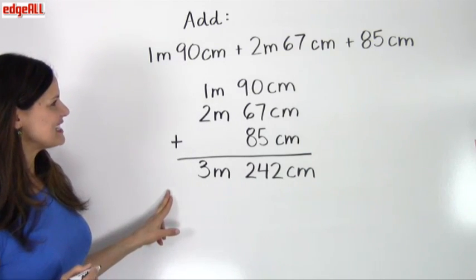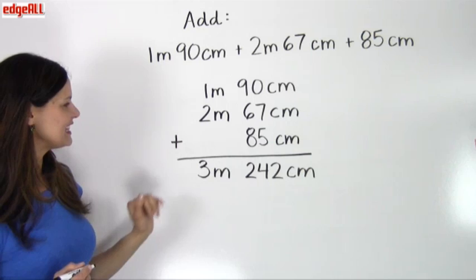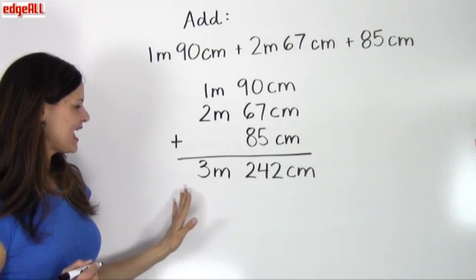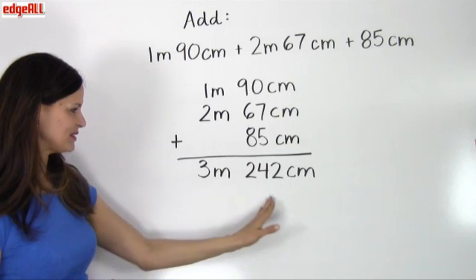So this is my first step of adding like units and vertically aligning the units. Then my answer here so far is 3 meters, 242 centimeters.